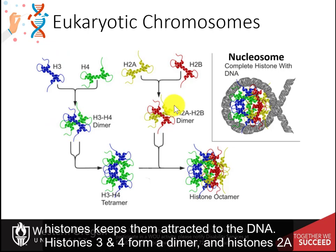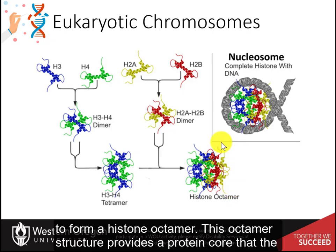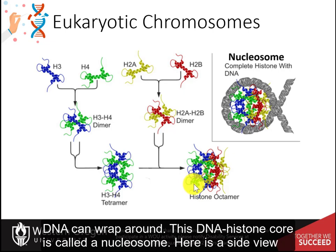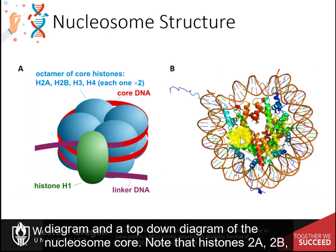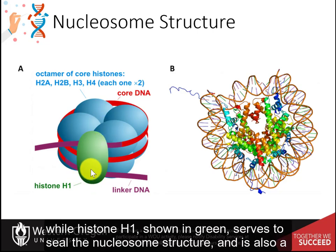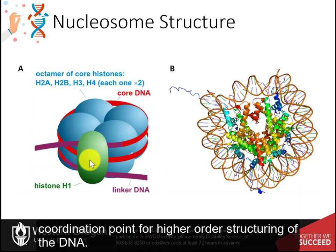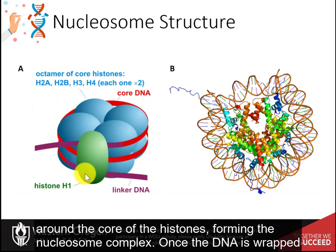Histones 3 and 4 form a dimer, and histones 2A and 2B also form a dimer. Both of these dimers will form a tetramer complex and then combine to form a histone octamer. This octamer structure provides a protein core that the DNA can wrap around. This DNA-histone core is called a nucleosome. Note that histones 2A, 2B, H3, and H4 form the octamer core, while histone H1, shown in green, serves to seal the nucleosome structure and is also a coordination point for higher order structuring of the DNA, so it serves as a linker. Note that the DNA is wrapped two times around the core of the histones, forming the nucleosome complex.